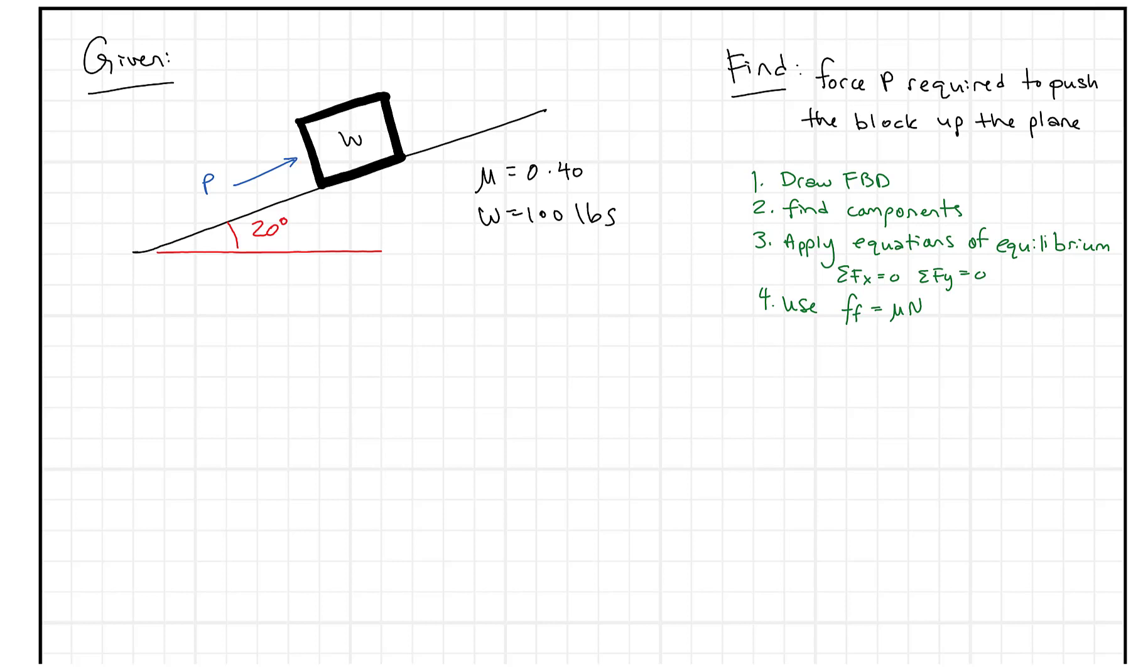Our approach here is we're going to first draw the free body diagram of the point right where this thing intersects in the center of mass through the surface, find the components of forces, and then apply our equations of equilibrium. To do that we'll need to use our friction formula where the force of friction equals the coefficient of friction times the normal force. Let's get started.